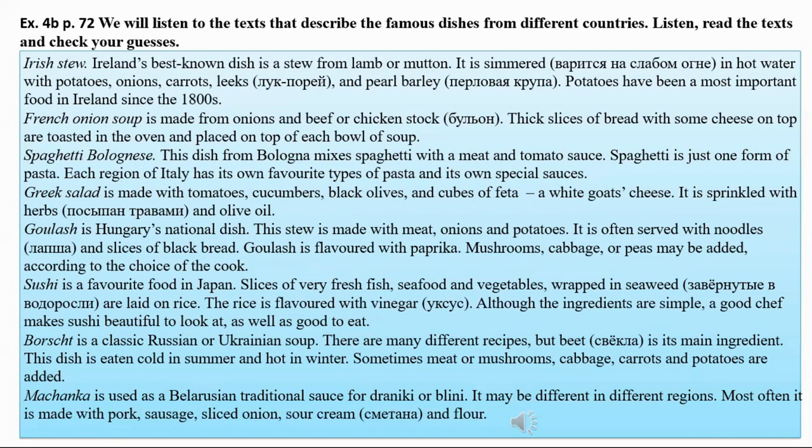Goulash is Hungary's national dish. This stew is made with meat, onions, and potatoes. It is often served with noodles and slices of black bread. Goulash is flavored with paprika. Mushrooms, cabbage, or peas may be added according to the choice of the cook.